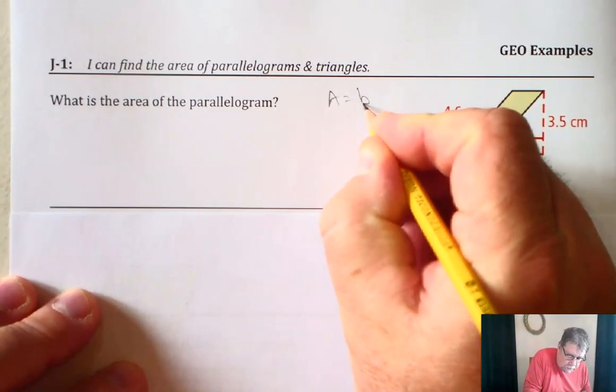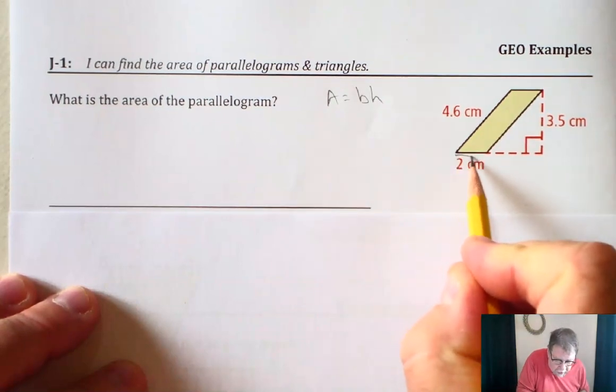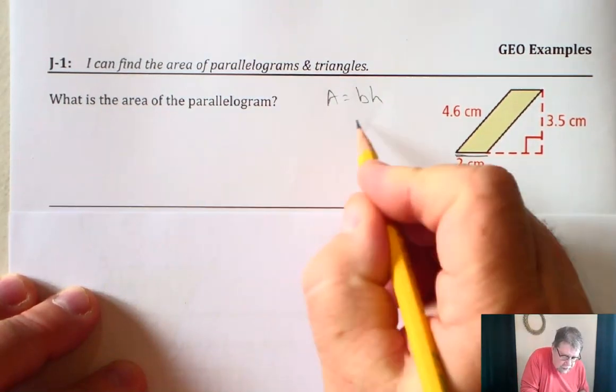The formula for the area, again, is base times height. The base can be thought of as this line right here. That's B, so that's a 2.